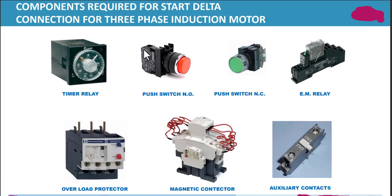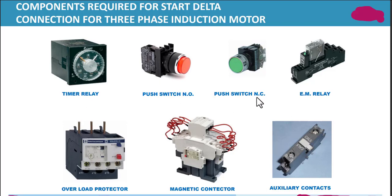The components required for a star-delta connection for a three-phase induction motor are: a timer, delay push button normally open, push button normally closed, EM relay, overload protector, magnetic contactor, and auxiliary contacts. These are the switches we will use.